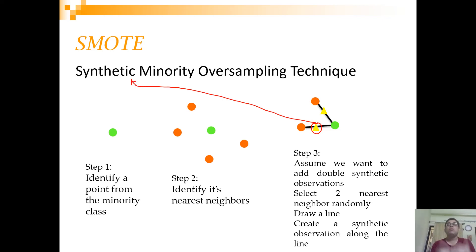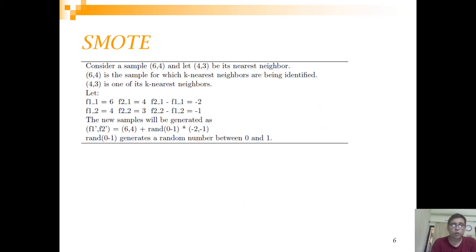Let's understand this with more examples. This is directly from Professor Chawla's paper. He is giving an example of two samples. One is having value six and four, and another is having value four and three. He is explaining how you can create a new value, a synthetic observation, based on these two original minority class observations.